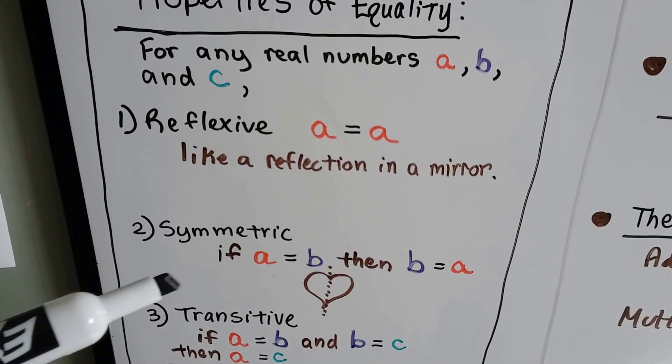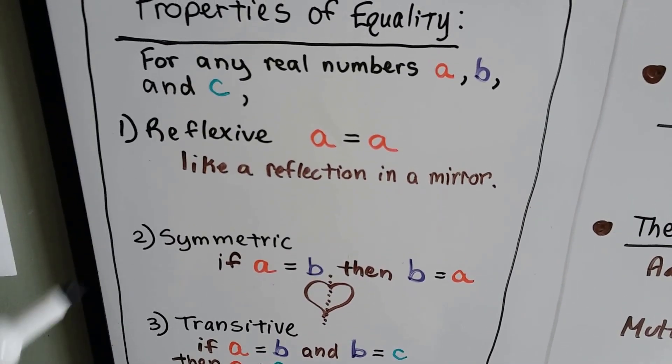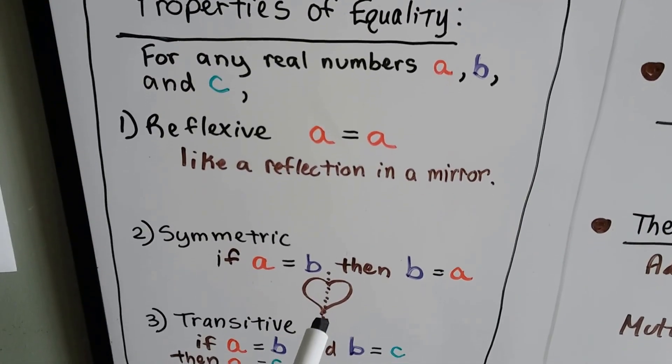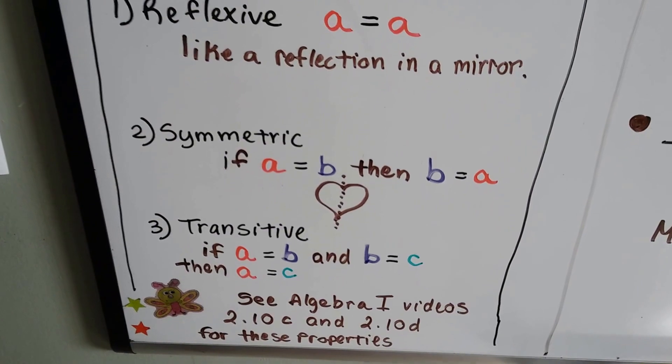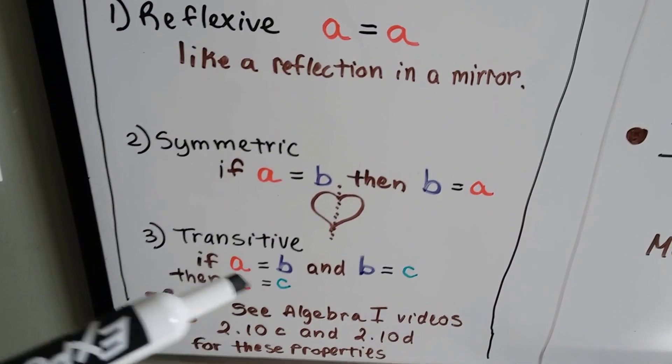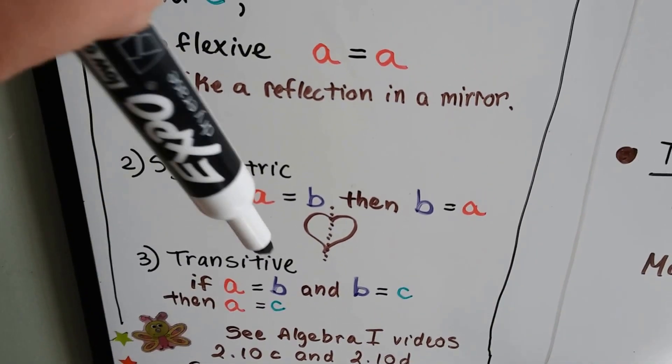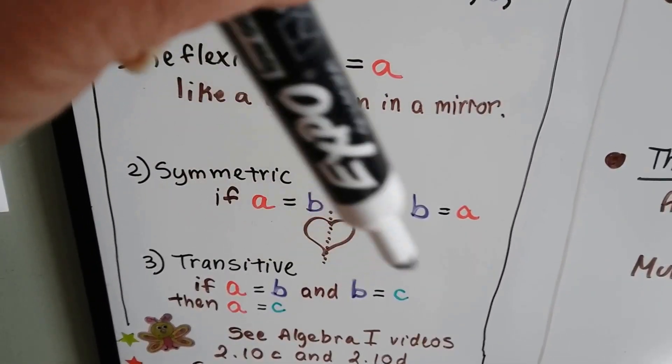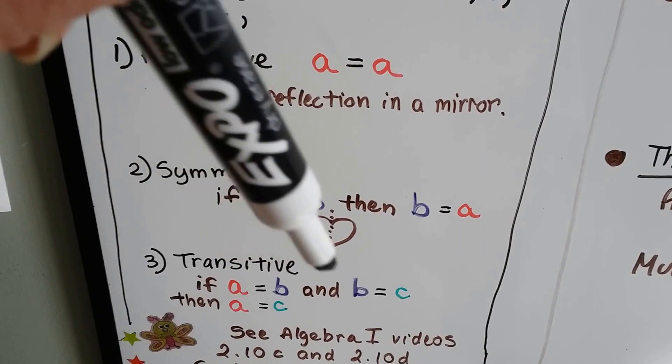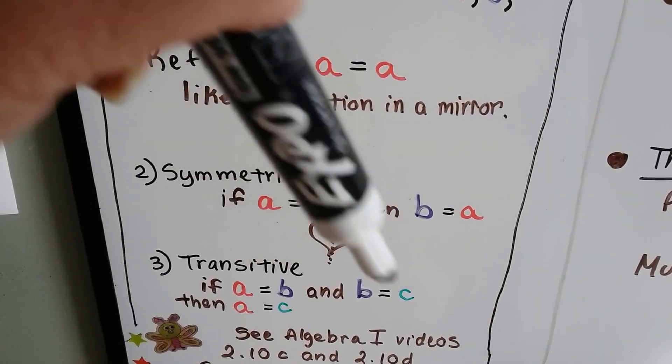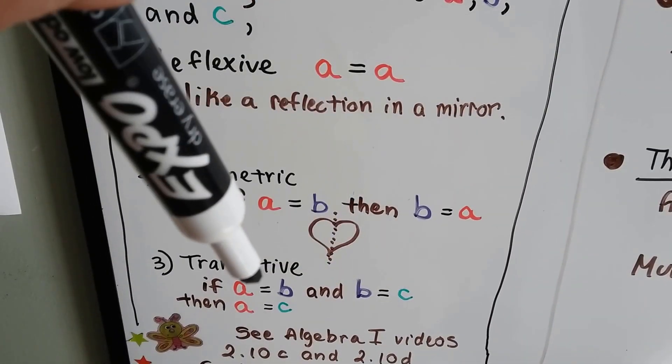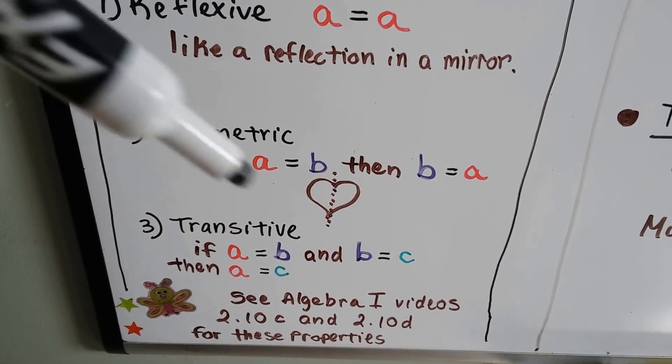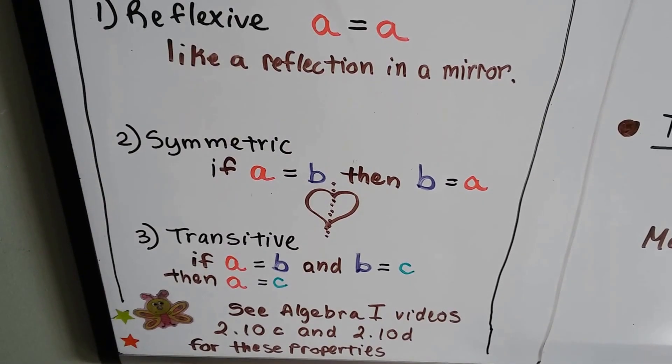The symmetric one says if A equals B, then B equals A. It's like splitting a heart down the middle with a line of symmetry. And the transitive says that A can be equal to C if they have B in between them. So if A equals B and B equals C, because they both are equal to B, then A has to be equal to C also. Both A and C are equal to B, so they have to be equal to each other also.